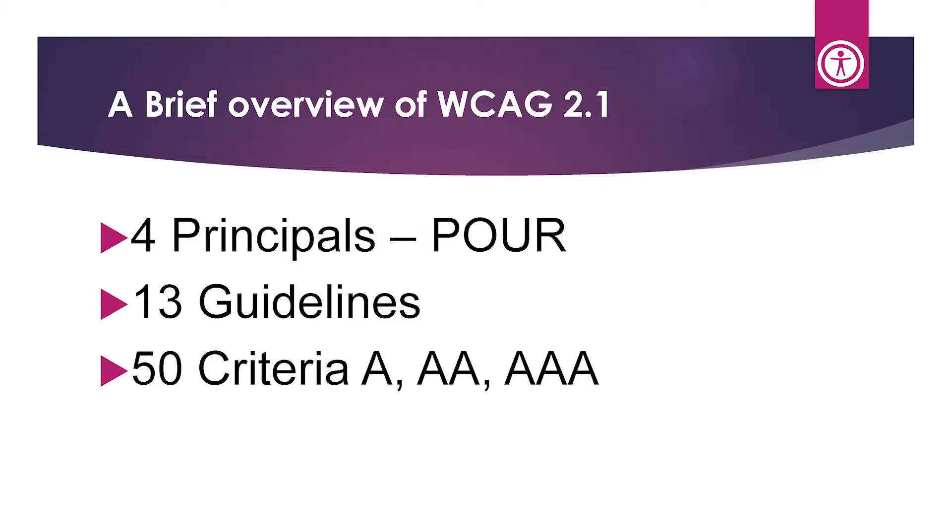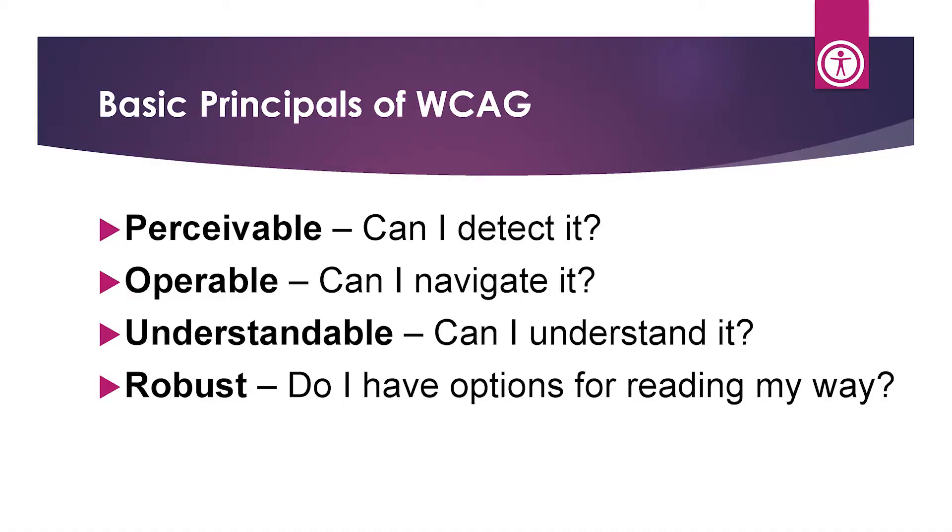The founding principles of the Web Content Accessibility Guidelines stem from four key pillars called the POUR principles. There are 13 major guidelines and 50 criteria that make up the A, Double-A, and Triple-A levels. You will probably never see a document required to be Triple-A compliant, and if you try, some requirements compete with others — so it can't be made completely perfect. Double-A is our standard and there are ways to make your document compliant.